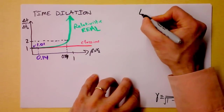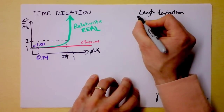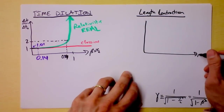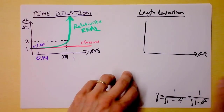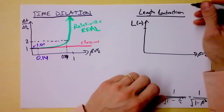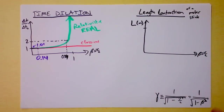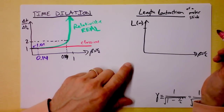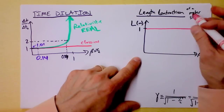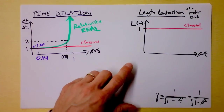Next let's look at length contraction — this is just a summary, not an introduction. Beta is again on this axis, V over C. On the vertical axis we have length in meters, specifically the length contraction of a meter stick, though everything scales the same way. The classical solution is simple: a meter stick is one meter long.